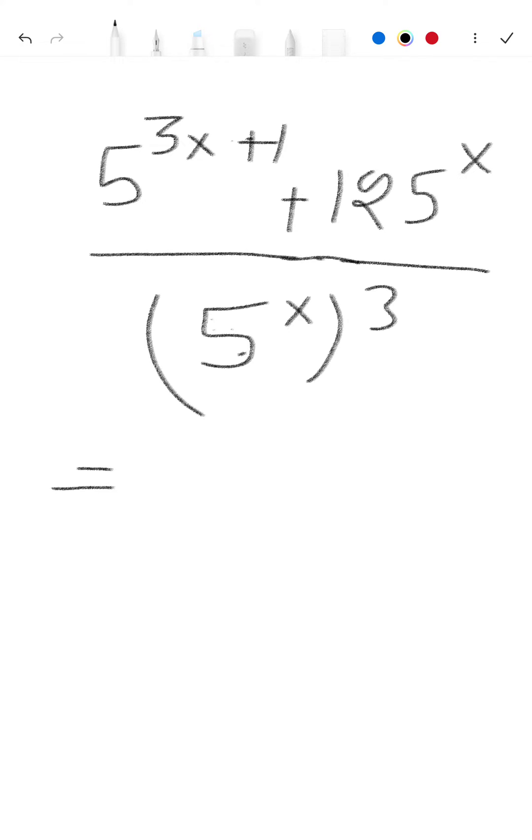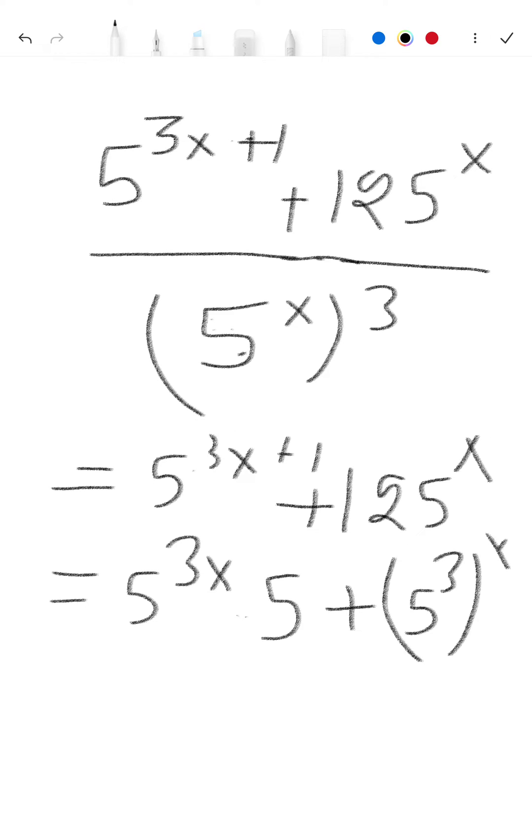So here we write as 5 to the power 3x plus 1, and here is 125 to the power x. We write here 5 to the power 3x multiply 5, and write 125 as 5 to the power 3x, with x as the whole power.